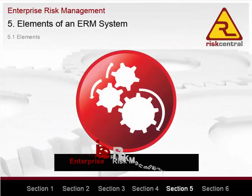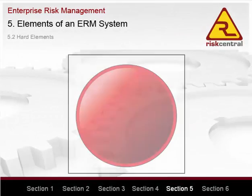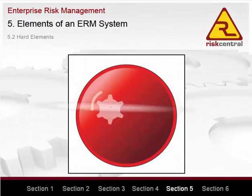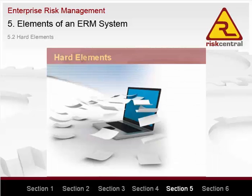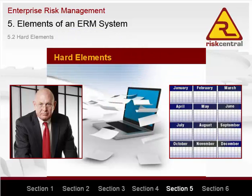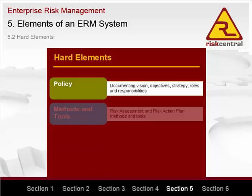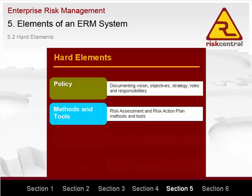As with all business systems, an ERM system requires a number of elements to perform effectively. ERM system elements can be broken into three parts. The hard elements provide information on what managers are expected to do and when and how they should do it. These hard elements are primarily documents: policy — documenting vision, objectives, strategy, roles and responsibilities; methods and tools — documenting risk assessment and risk action plan methods and tools.